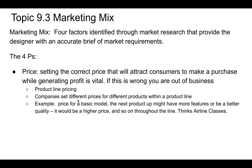Product line pricing is where companies set different prices for different products within a product line. You have a price for a basic model, then the next product up has more features and better quality at a higher price, and so on. Think of airline classes: standard economy, then premium economy, then business class, with gradations between all of them — one class won't earn as many miles as another. Or look at cars: a car will have a basic model, and as you add features it brings up the price.